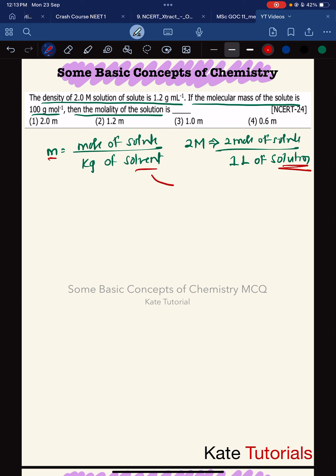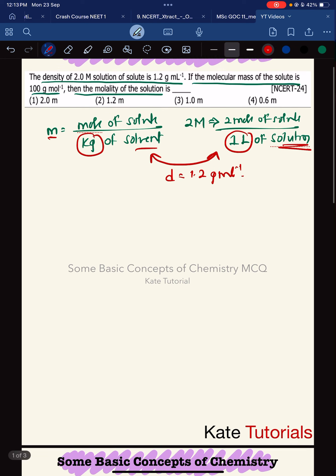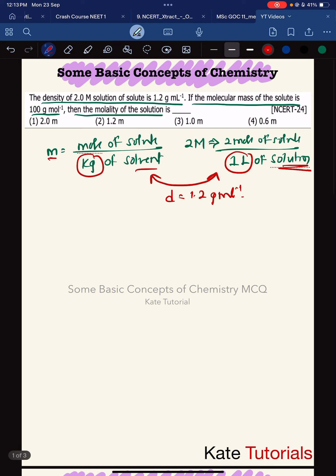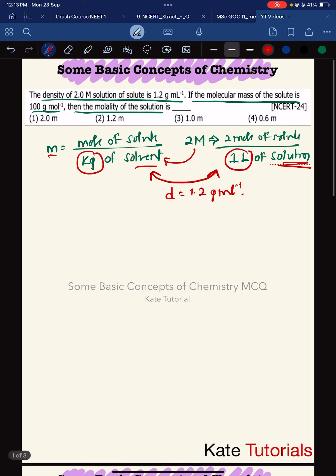To connect them - this is weight and this is volume - I need density, and density they have given 1.2 gram per ml. So there is a long method to convert molarity in terms of molality. Another way, the shortest way, is using a formula.